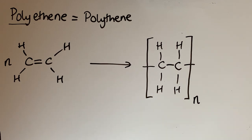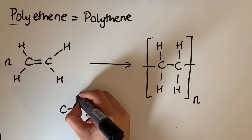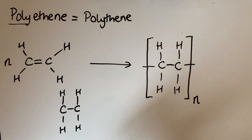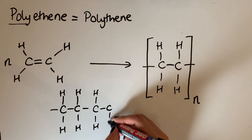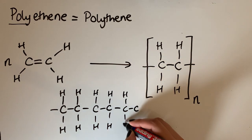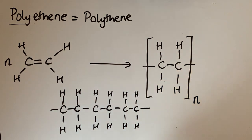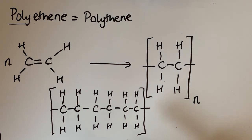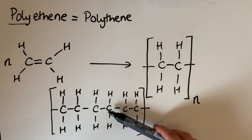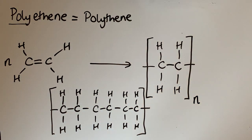If a question asks you to draw more than one repeat unit — say three repeat units of polyethene — you draw one repeat unit and join three of them together, with extending bonds at either side and square brackets around the whole thing. All addition polymers, if you were to draw the whole thing out, have a carbon backbone — carbon atoms going all the way through the molecule. That's a trait all addition polymers share, and it will be useful to remember when we look at condensation polymers.